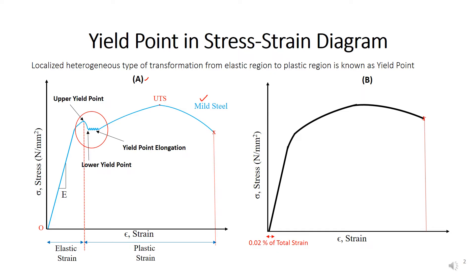Up to the yield point we have elastic strain, and beyond the yield point up to the fracture of the component we have plastic strain — plastic strain means permanent deformation. However, most materials do not show the type of curve that mild steel shows. The typical curve shown in Figure B is what you will observe for most ductile materials.